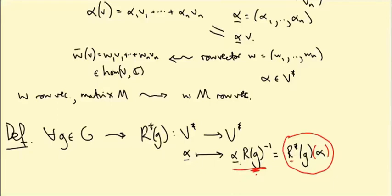So maybe I should even put an underline here to say this is the row vector corresponding to R star G alpha. Okay don't get carried away by the notation. The idea is I'm multiplying on the right by R(G inverse).